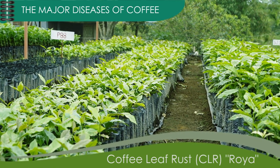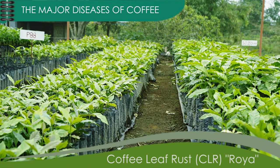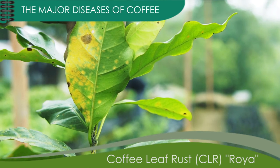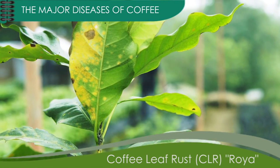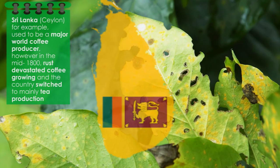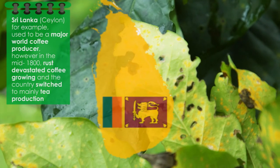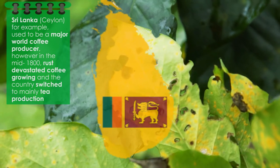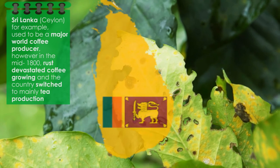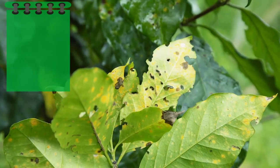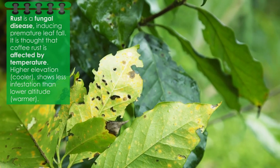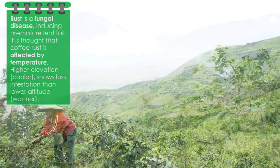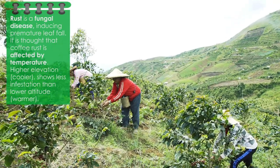The major diseases of coffee. Coffee leaf rust, also called by the Spanish name Roya, has severely damaged many growing areas worldwide. Sri Lanka, for example, used to be a major world coffee producer; however, in the mid-1800s, rust devastated coffee growing and the country switched to mainly tea production. Rust is a fungal disease inducing premature leaf fall, and it's thought that coffee rust is affected by temperature — higher elevation shows less infestation than lower altitude.